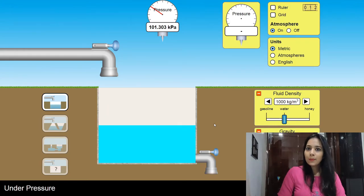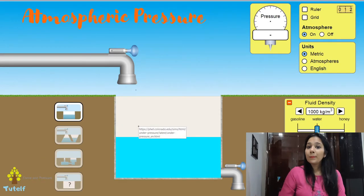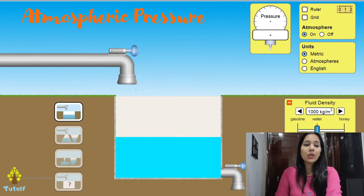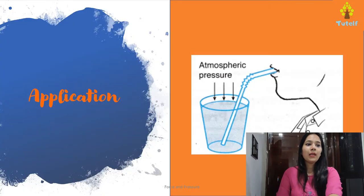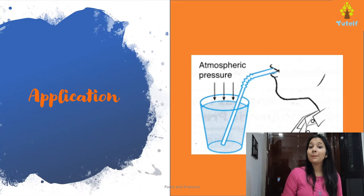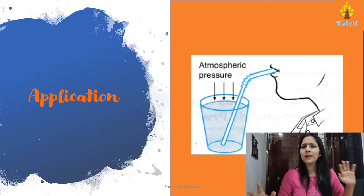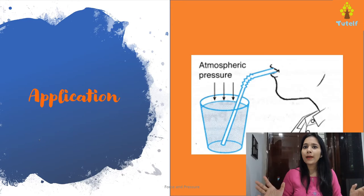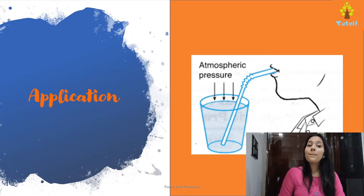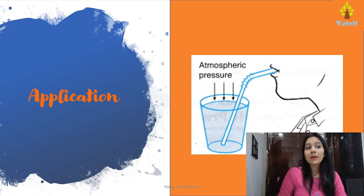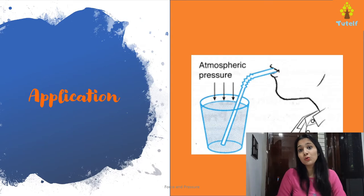Let's go back to our PPT. We are back to the PPT. We have seen the applications of atmospheric pressure — we have high pressure, low pressure, and all of that. So when you drink water from a straw, atmospheric pressure is used.